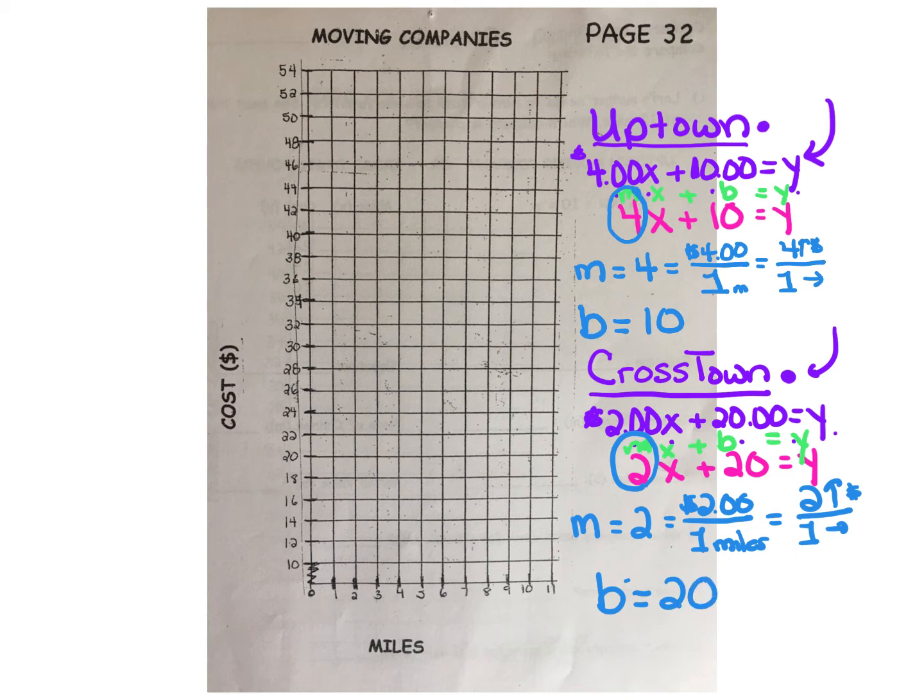Now that we've pulled out the important pieces from each equation, let's take a look at our graph. We see that the x values along the bottom axis represent miles: 1 mile, 2 miles, 3 miles, etc. Up the side, the y value is cost. We can see that starts at $10 and rises in increments of 2: $12, $14, $16, etc.